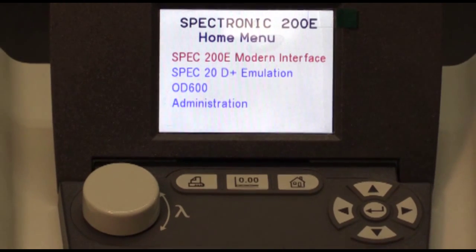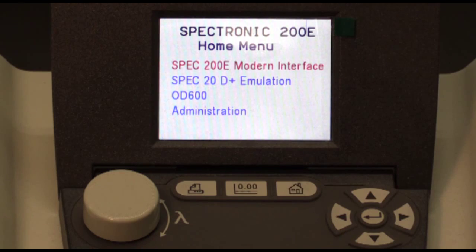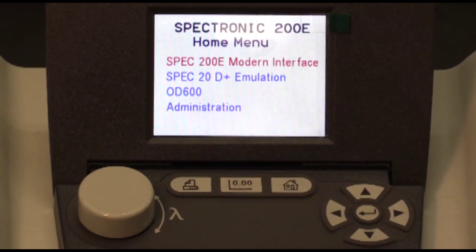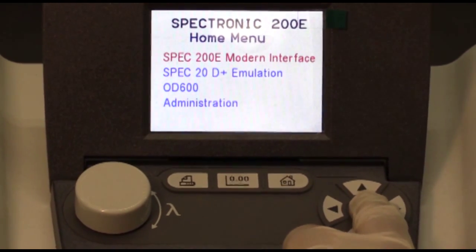At this point, this is where you can adjust the wavelength of the instrument to analyze the sample of interest. To adjust the wavelength, make sure the first option is highlighted in red, and then to open it, hit the enter button.